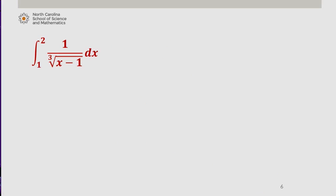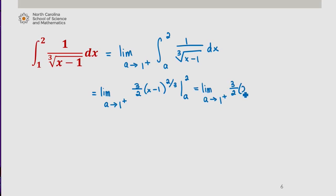Okay, we're going to hold on to that and move to the second part of our integral. We can rewrite this as the limit as a approaches 1 from above because our discontinuity is now the lower bound from a to 2 of 1 over cube root of x minus 1 dx. Integrating as we did before, we find this is the limit as a approaches 1 from above of 3 halves times x minus 1 to the 2 thirds evaluated from a to 2. This is equal to the limit as a approaches 1 from above of 3 halves times 2 minus 1 to the 2 thirds minus 3 halves times a minus 1 to the 2 thirds.